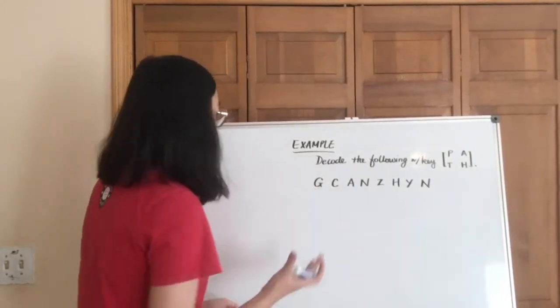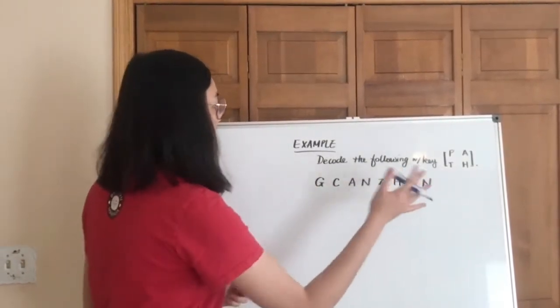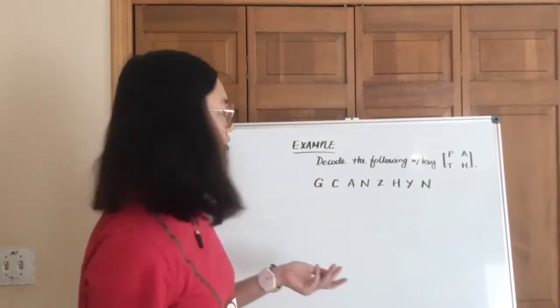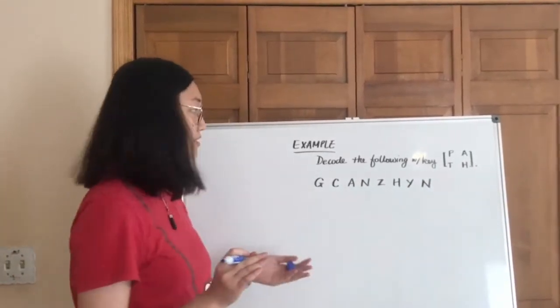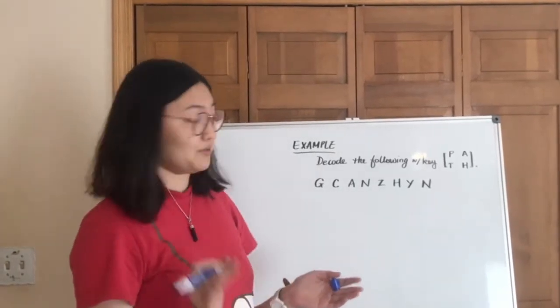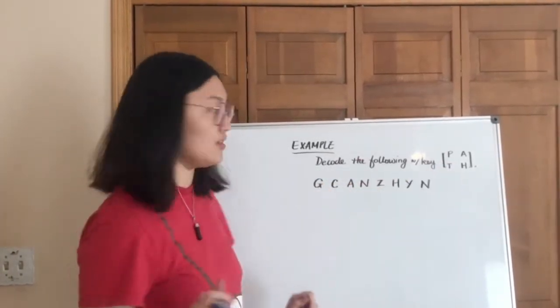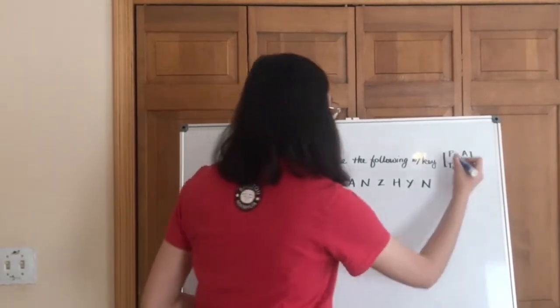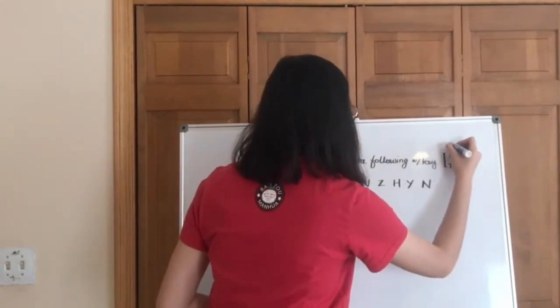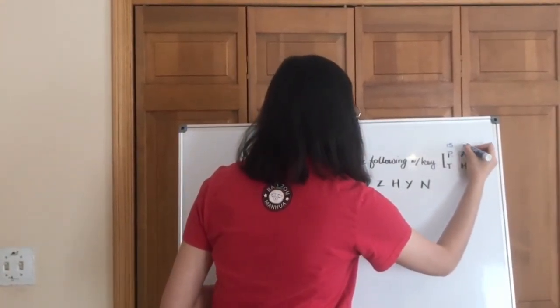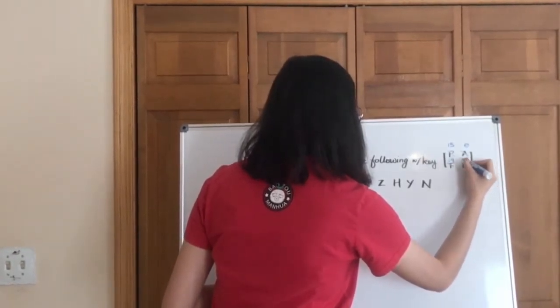So here, decode the following with a key path. You might say, okay, so this is not a matrix, it's made up of a number of letters. So here's what we're gonna do. We're gonna change these into numbers. So we can say P is 15, A is 0, T is 19, and H is 7.